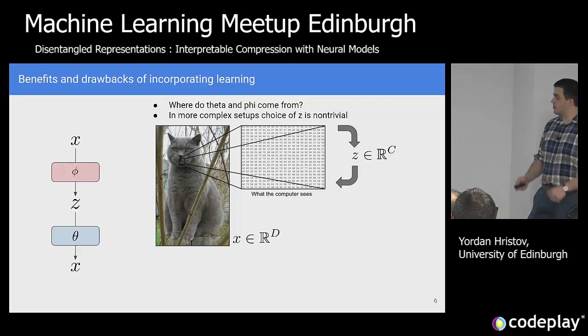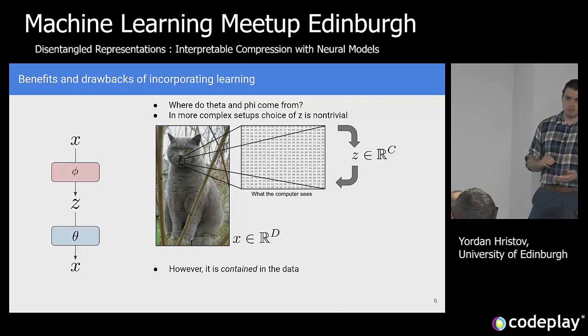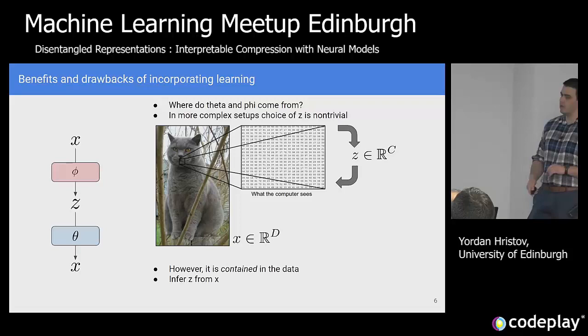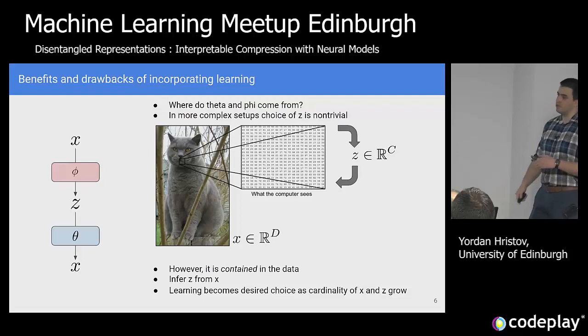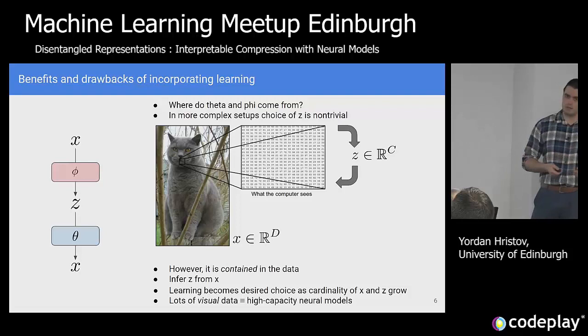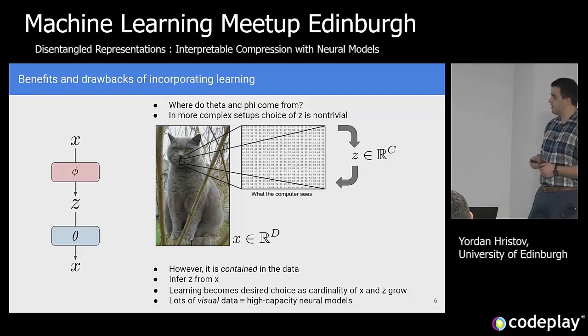Even if you come up with the right state space, how do you engineer a fluffiness detector? At that point it becomes clear that most of what we need when describing the data is contained in the data itself. It might be easier to infer the latent representation Z plus the encoder and decoder — to learn them from data rather than sit down and engineer them, especially when the cardinalities of X and Z grow too large and when we have too much data at hand. For visual data, neural networks are what people use nowadays to learn these representations.